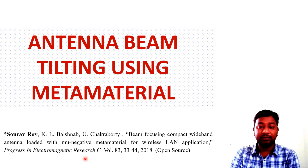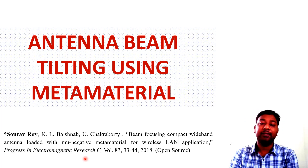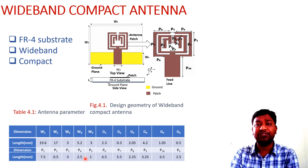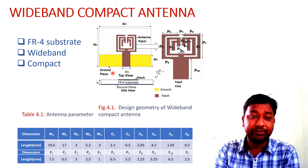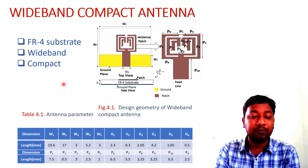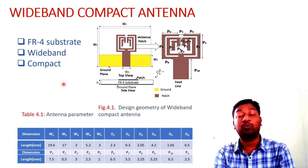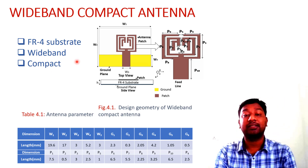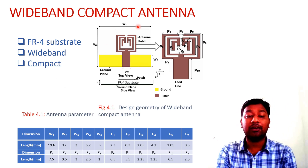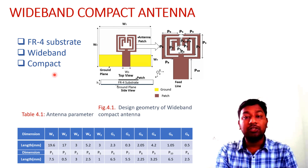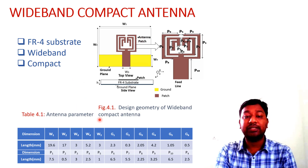We will see how metamaterial are used to tilt the beam of an antenna in different directions and how we can achieve this. First, we designed a wideband compact antenna which covers the frequency band from 5 to 6 GHz. The antenna has a compact structure with overall dimensions of approximately 20 by 20, using an FR4 substrate.